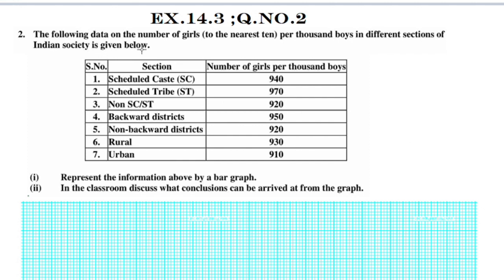The following data on the number of girls per thousand boys in different sections of Indian society is given. This example covers information about the number of girls in different sections of Indian society per 1,000 boys. The data includes rural at 930 and urban at 910. We need to represent this information using a bar graph.